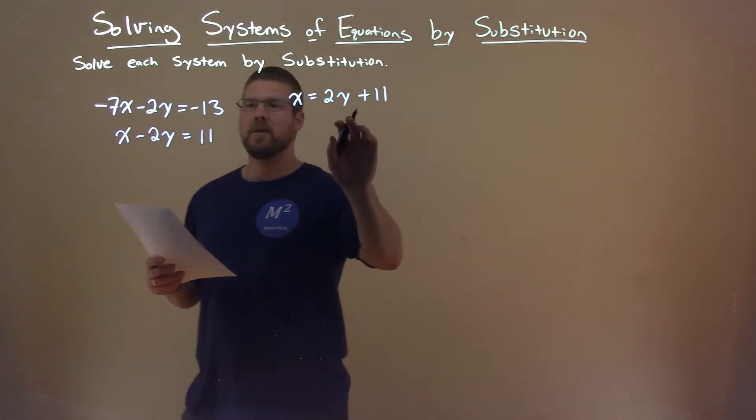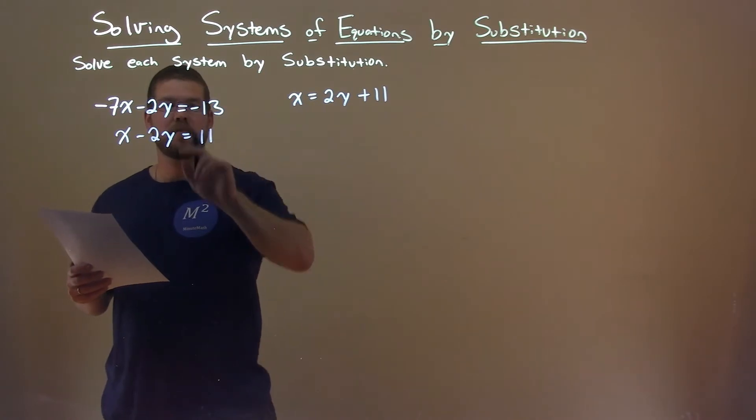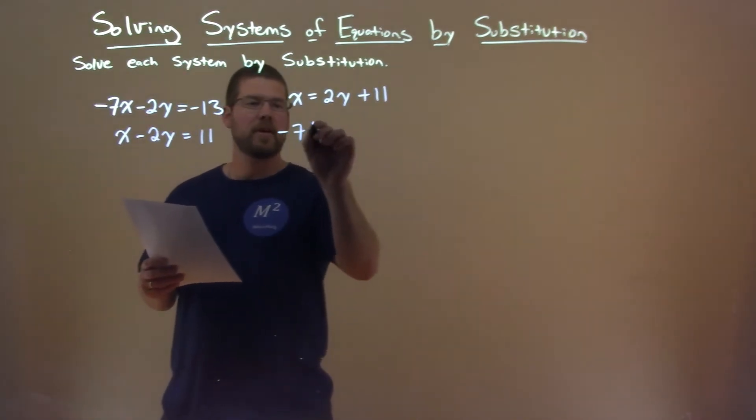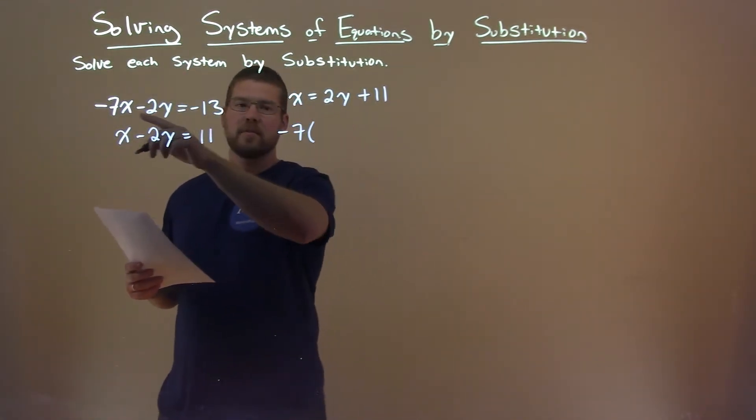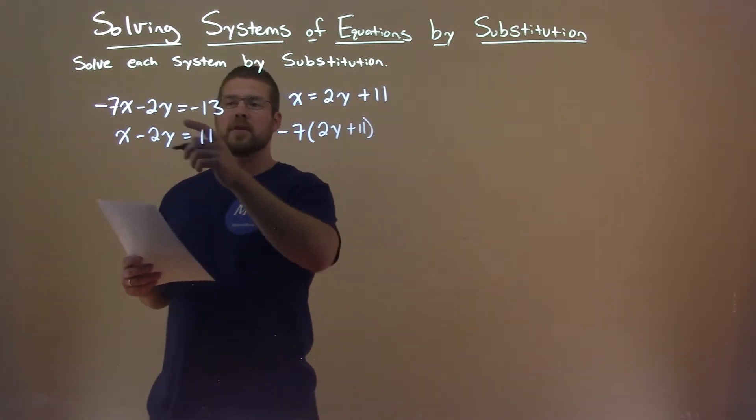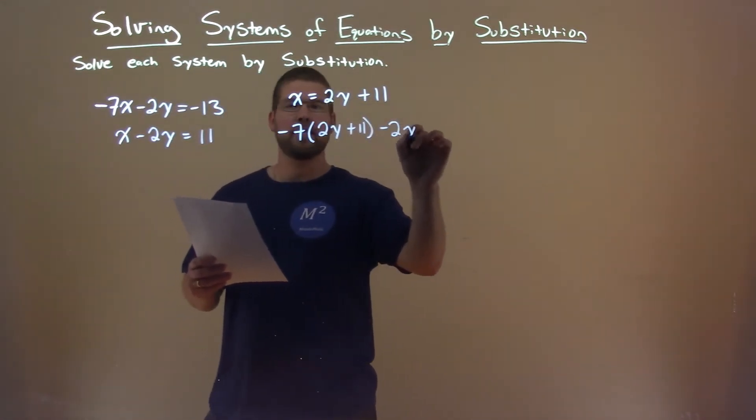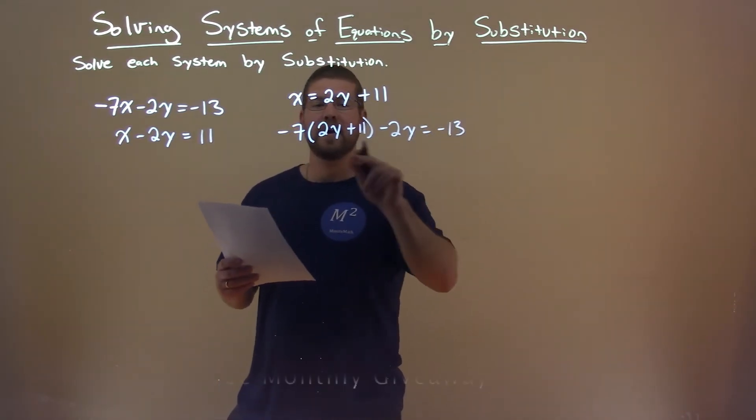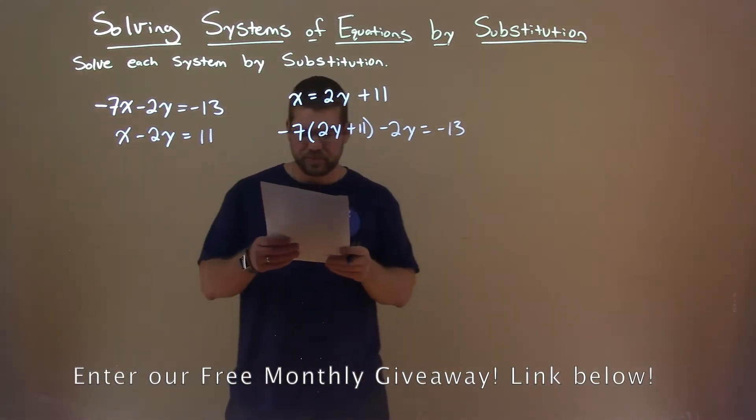We then can take that information and plug it into the x value in the first equation. Minus 7, now instead of x, we plug in 2y plus 11, and we finish the first equation, minus 2y equals negative 13. Hence, that substitution right there.